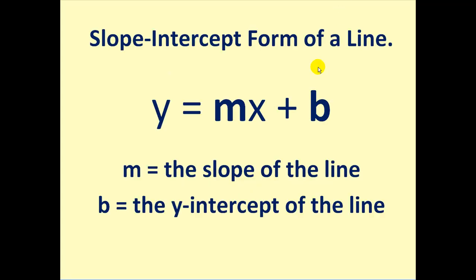We are all familiar with slope-intercept form of a line where y equals mx plus b, where m is the slope and b is the y-intercept. Of all the forms of linear equations, this is probably the most popular one because it's very easy to work with — you can graph it quickly without doing any calculations. But the focus of this video is the point-slope form of a line, which can also be very useful.